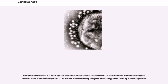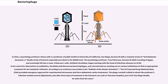In 2015, a psychology professor, Tom Patterson, whose wife Stephanie Strathdee is a professor of public health at University of California, San Diego, became ill with the resistant strain of Acinetobacter baumannii — a deadly strain of bacteria especially prevalent in the Middle East — while traveling in Egypt, and eventually fell into a coma. Strathdee began working with the head of infectious diseases at UCSD, discovered bacteriophages as an alternative to antibiotics, and reached out to various institutions to find an appropriate treatment. The FDA provided emergency approval for experimental intravenous and intra-abdominal cavity treatments. After several adjustments to the phage cocktail and three days of treatment in the intensive care unit at Thornton Hospital, part of UC San Diego Health, he woke from his coma.